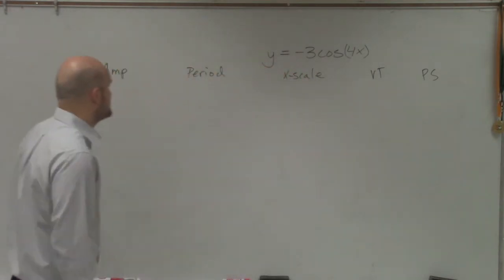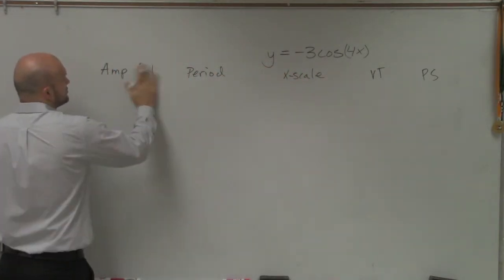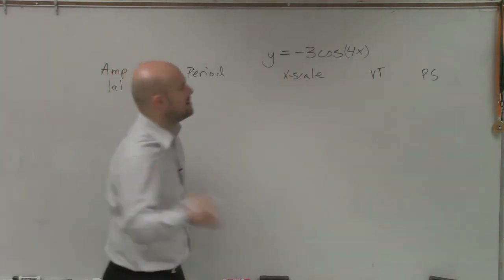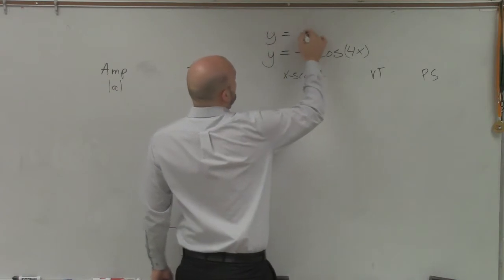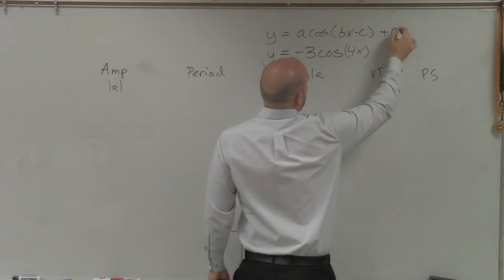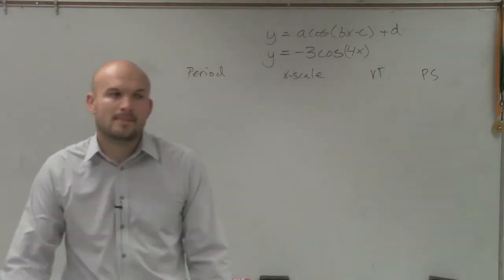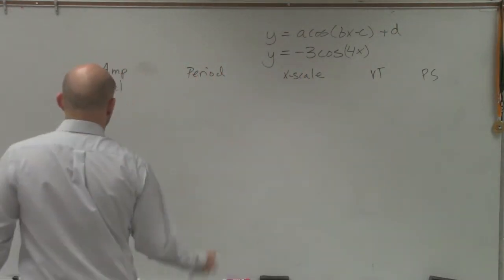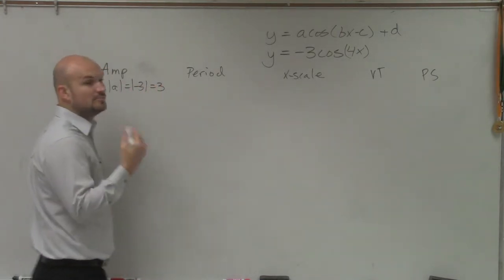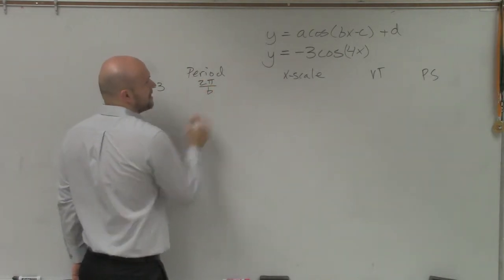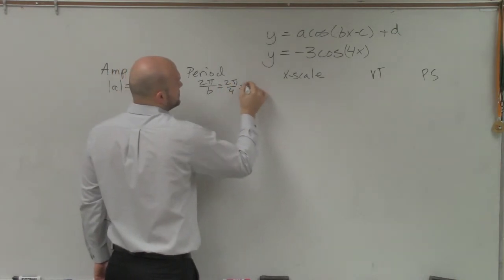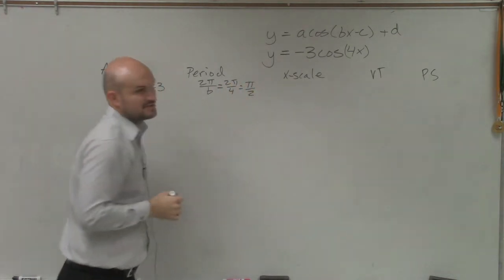Remember, the amplitude was your absolute value. Let's do it below. Absolute value of a. And remember the general form, y equals a times cosine of bx minus c plus d. So absolute value of a, in this case, that's absolute value of negative 3, which equals 3. The period, remember, was 2π divided by b. In this case, our b is 4. So it's 2π divided by 4, which equals π halves.